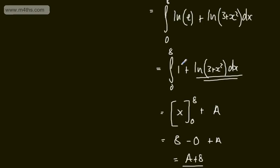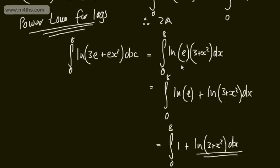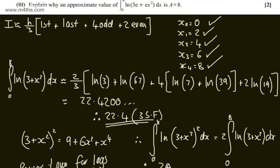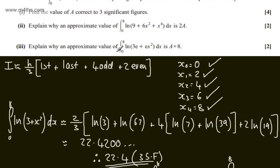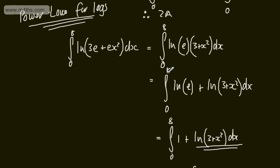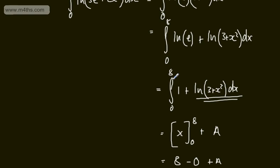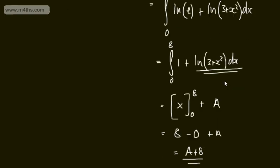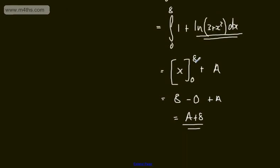There's a slicker way of doing that, but all I've done is factor out e and use log laws to show that this gives us the integral of 1 and then what we've already had. We know this is a, and we evaluate the integral of 1 with respect to x between 0 and 8 to get 8. So that's one way that you could show it.